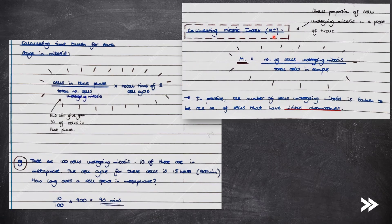Calculating mitotic index is also a common question. The mitotic index shows the proportion of cells undergoing mitosis in a piece of tissue. To calculate the mitotic index, simply divide the number of cells undergoing mitosis by the total number of cells in the sample.